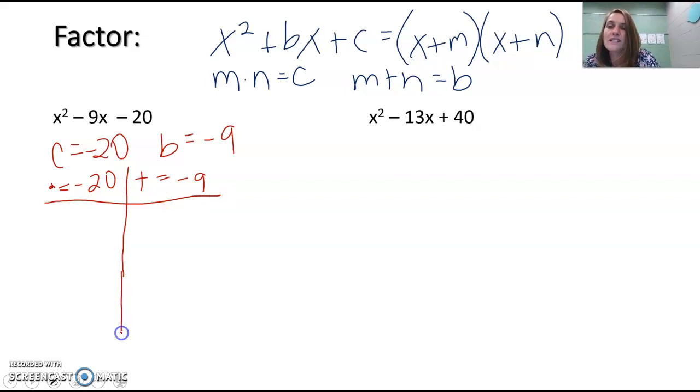It's easier to think of numbers that multiply to -20 since you have a smaller list. You don't have to begin with 1 and 20; you can start with whatever numbers you think of, like 2 and 10, or 5 and 4. Those are your pairs: 1 and 20, 2 and 10, 5 and 4. But since it's -20, one has to be negative and one has to be positive.